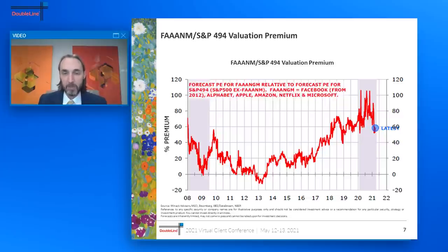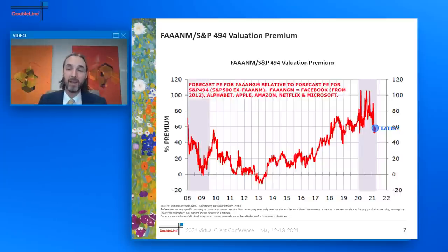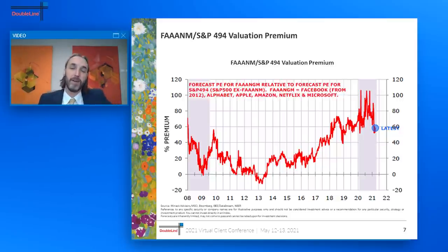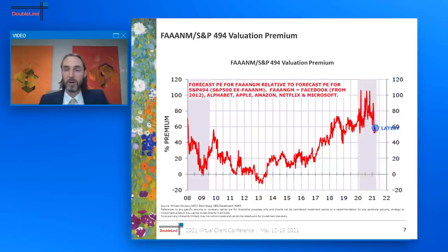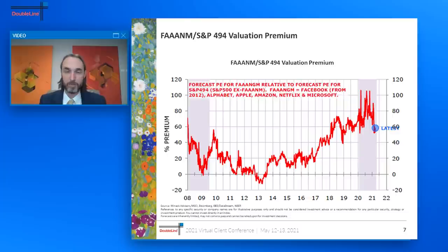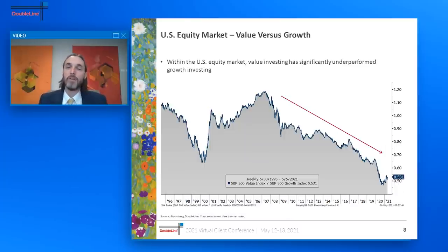If you look at the relative premium people pay for the FAANM stocks relative to the rest of the S&P 500, that premium is very significant. Earnings don't mean-revert typically, but valuations do. Perhaps the S&P 494 is much more attractive than what people think when they look at the broad-based S&P 500. If anybody out there is an ETF creator, I'd expect to see an S&P 494 ETF on the horizon soon.